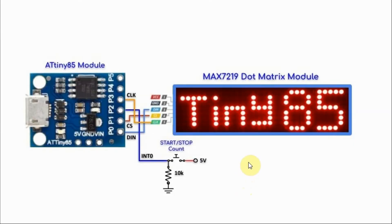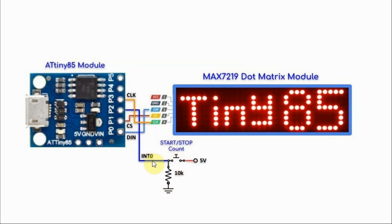This is the circuit diagram showing the interfacing of the MAX7219 dot-matrix module with the ATtiny85 module using an SPI connection, where data-in is connected to P0, chip enable is connected to P1, and the clock is connected to P3. We also have a push button connected to pin interrupt zero of the module.